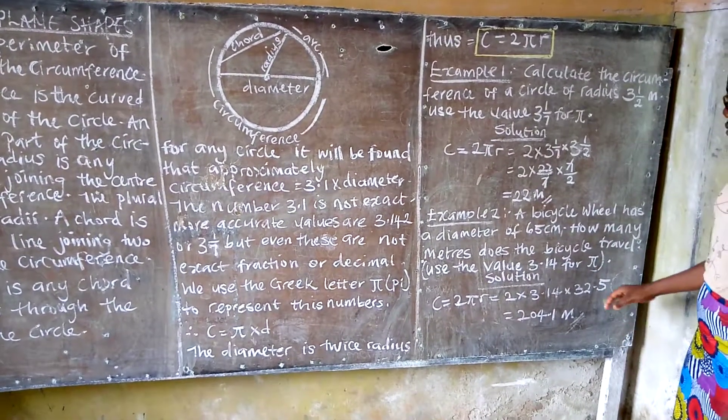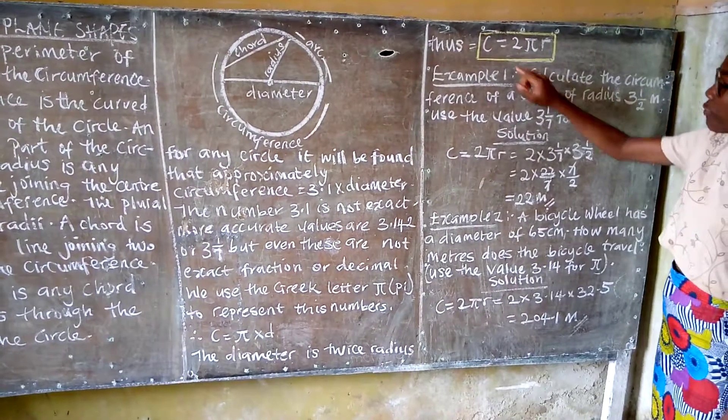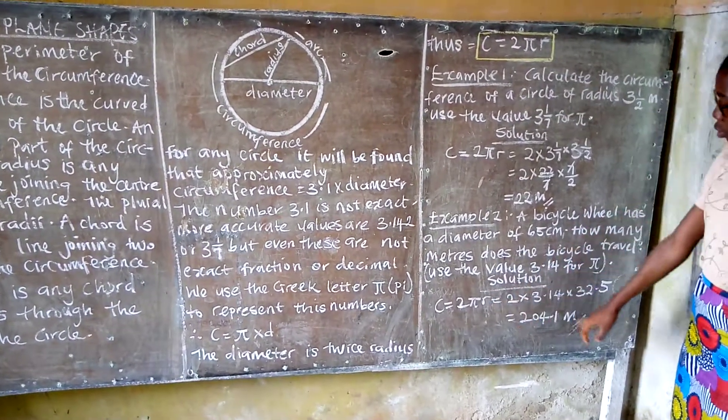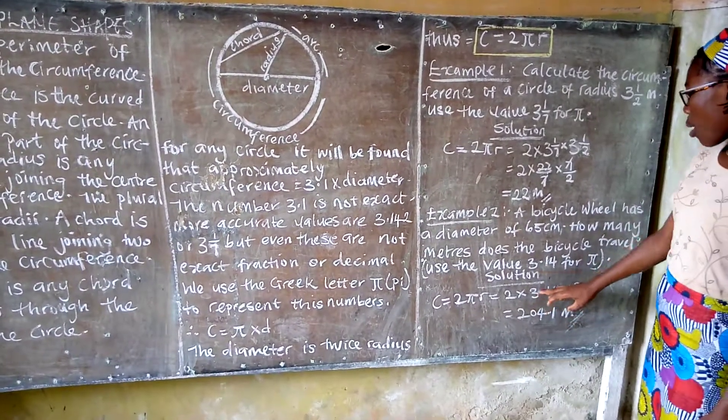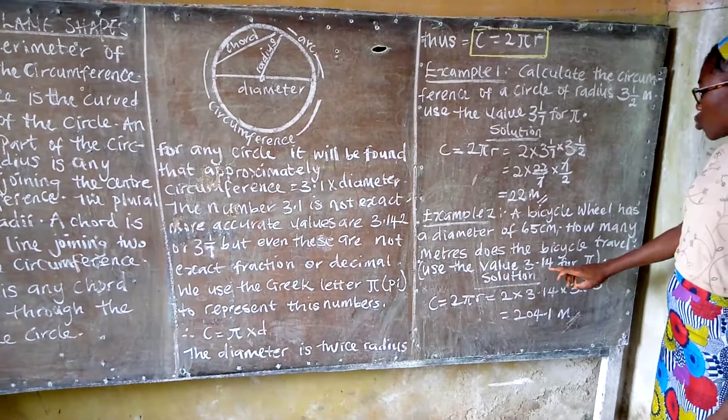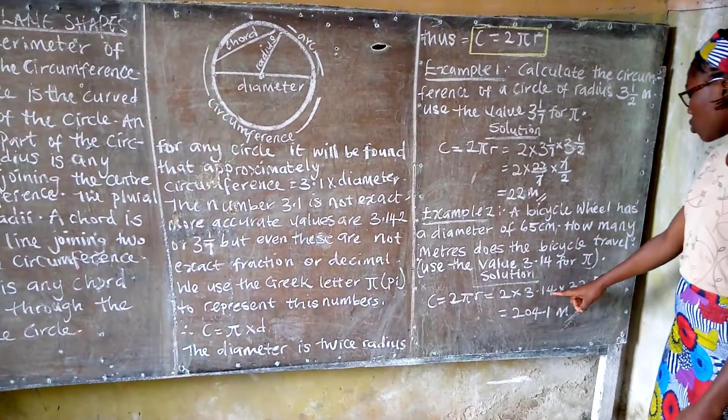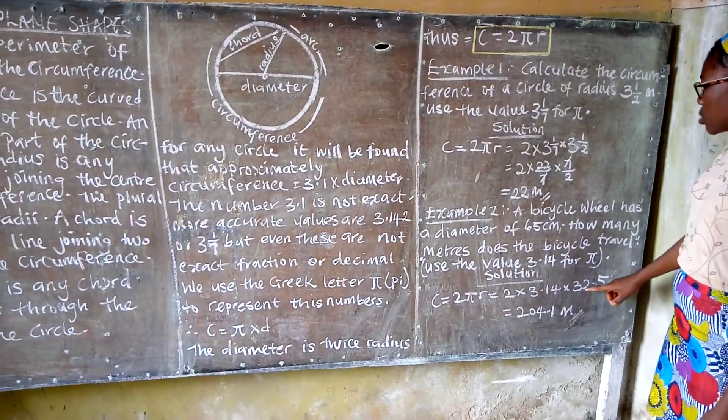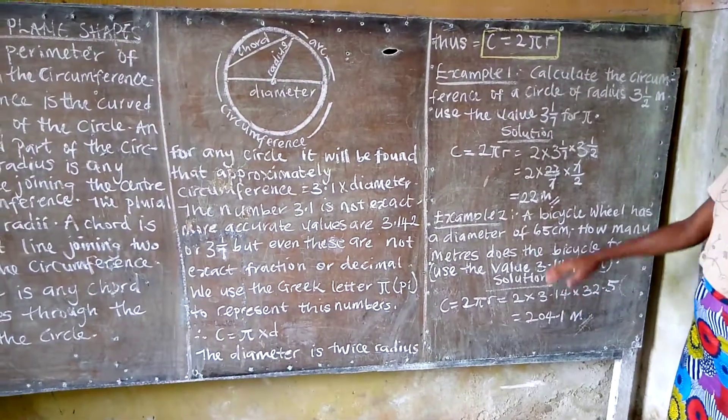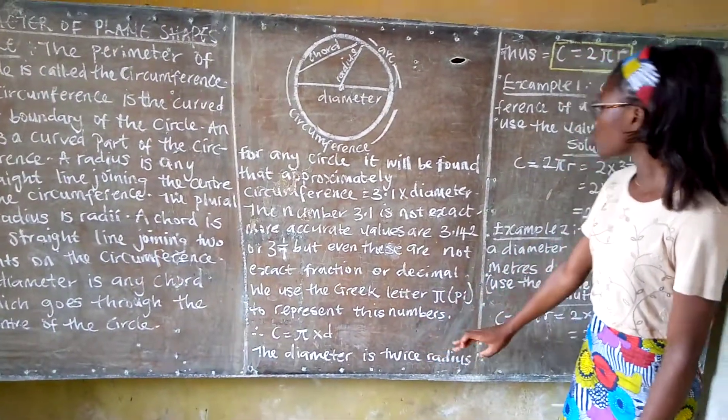Solution: The circumference is 2πr. So 2 times π, which is 3.14, times the radius. Since the diameter is twice the radius, we say 2 × 3.14 × 32.5.